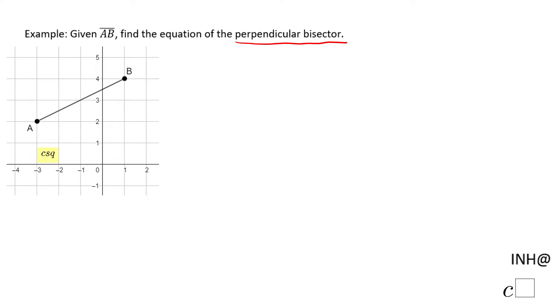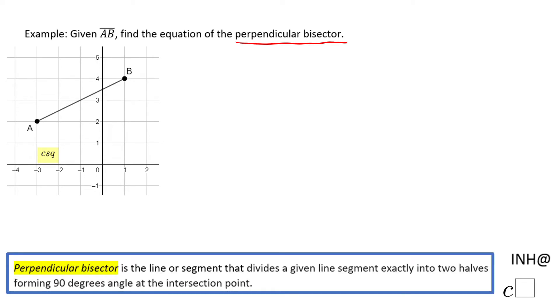First of all, let's see what the perpendicular bisector is. It's a line or a segment that divides a given line segment exactly in two halves. So this is the given segment, AB.